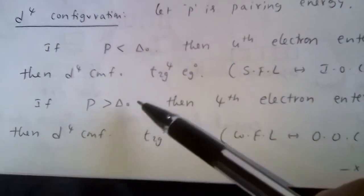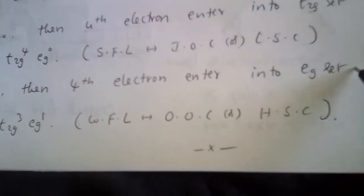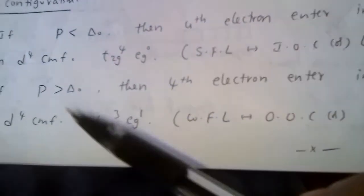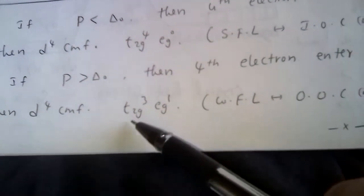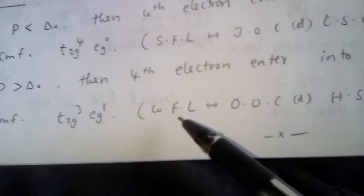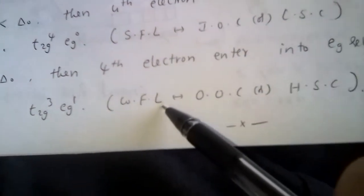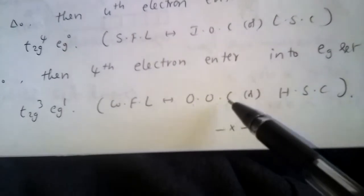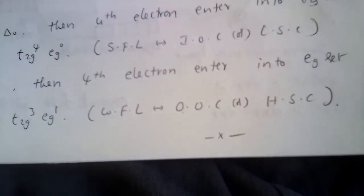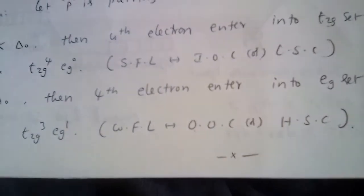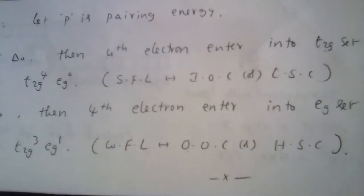If pairing energy P is greater than Δ₀, the 4th electron enters into the Eg set without pairing, giving configuration T2g³ Eg¹. In this case, the ligand is a weak field ligand, and the complex formed is an outer orbital complex, also known as a high spin complex. This completes the crystal field splitting of the octahedral complex.